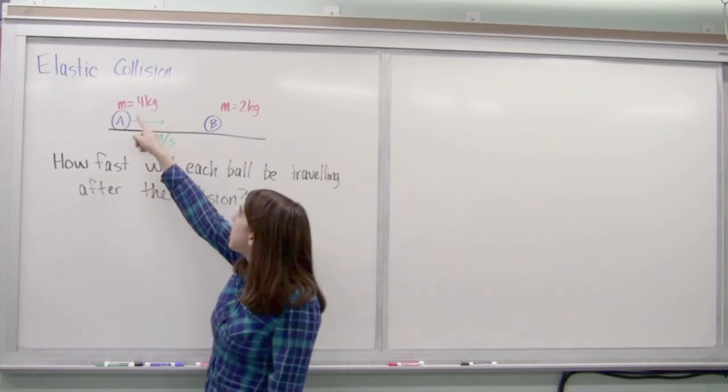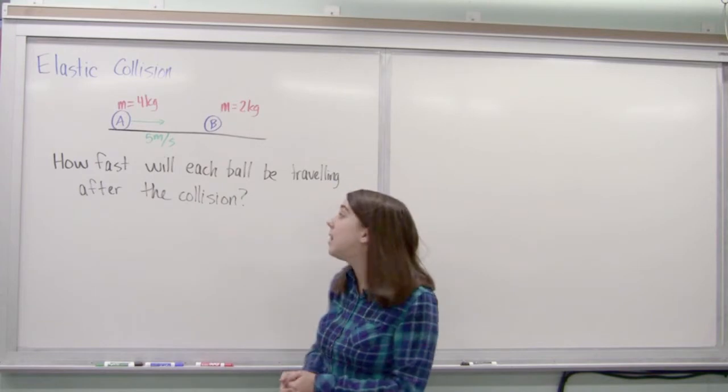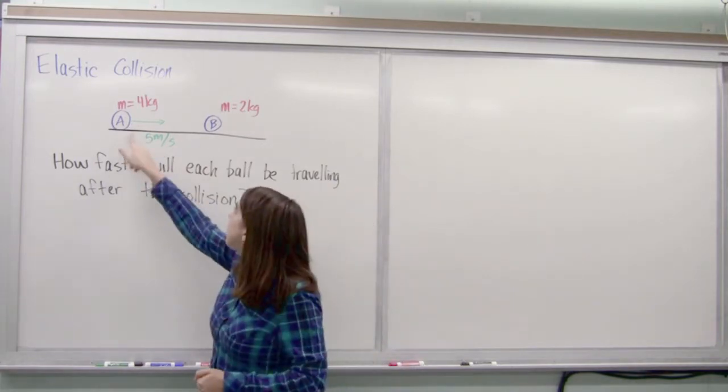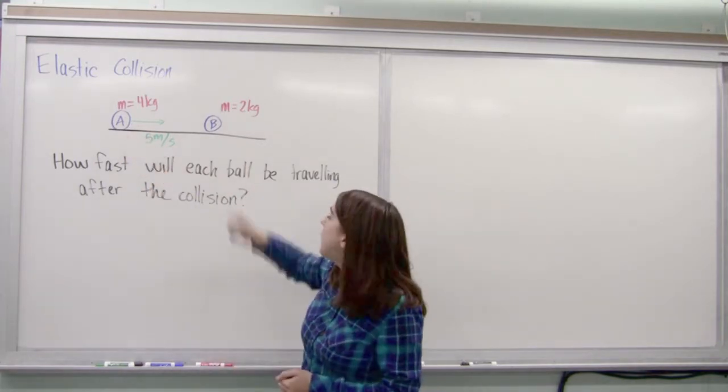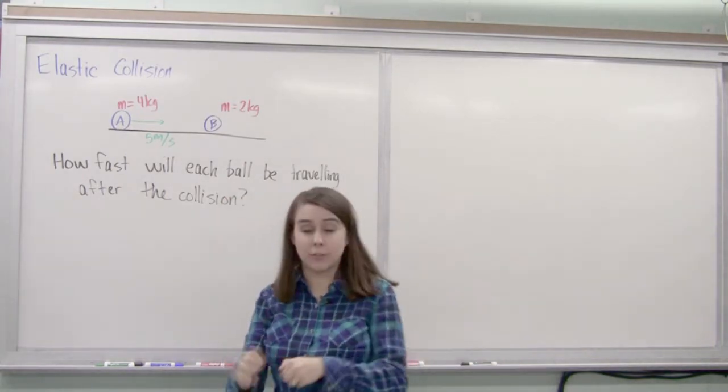Ball A has a mass of 4 kilograms, ball B has a mass of 2 kilograms, and in the beginning ball A is traveling 5 meters per second towards ball B. They're going to collide with each other and we want to know how fast they're each going to be going after that collision.